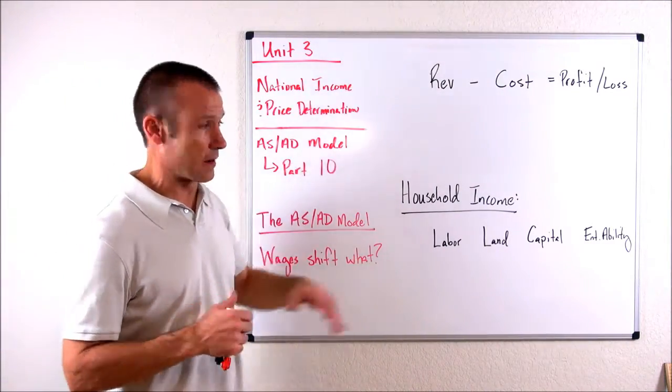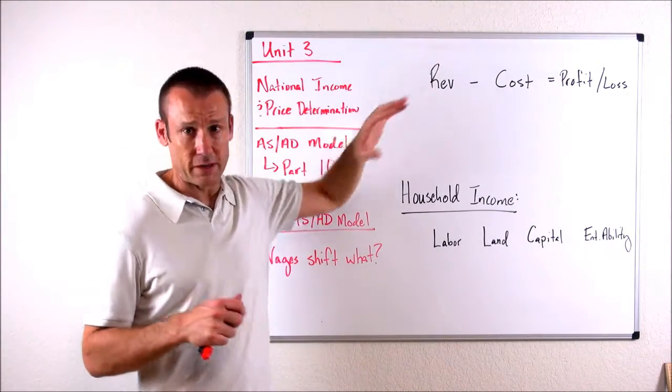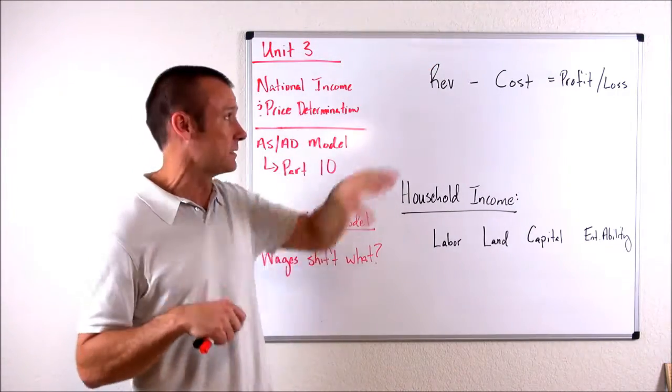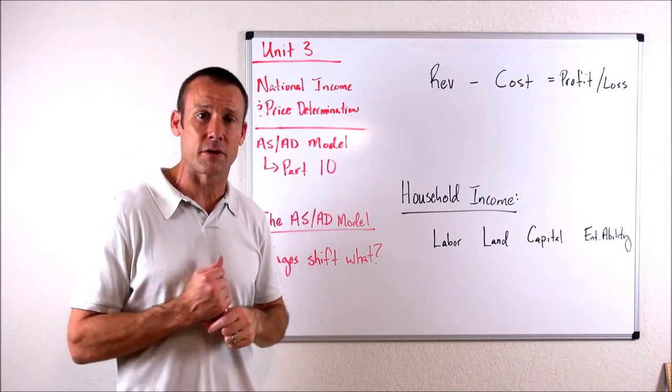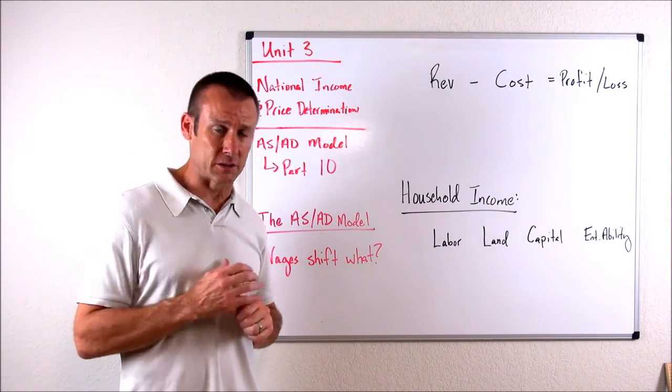I've got a couple things on my board. This first equation - who's making decisions based on it? Businesses. And what type of decisions? Production decisions.